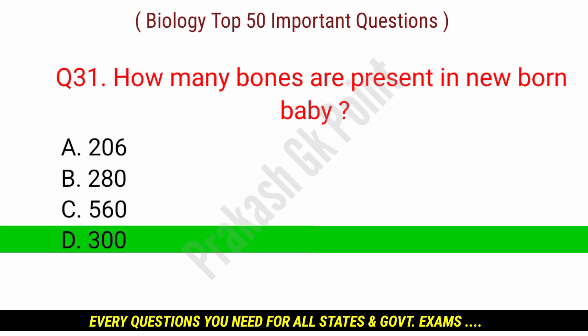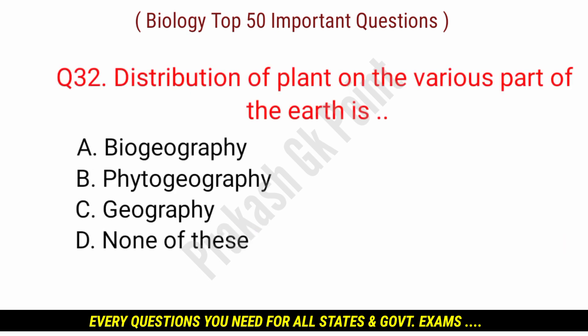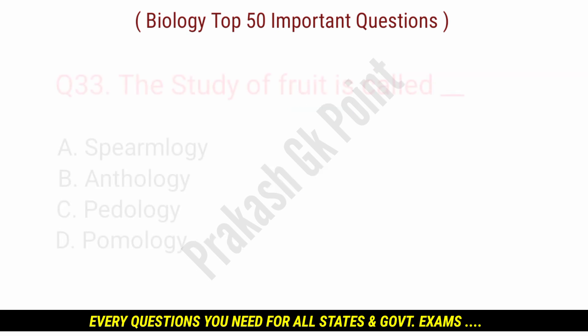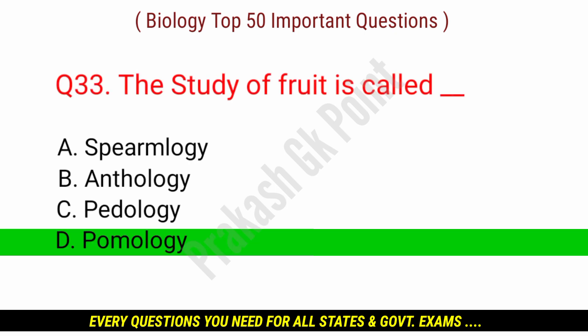Answer: option D — 300. Distribution of plants on various parts of the earth is called? Answer: option B — Phytogeography.